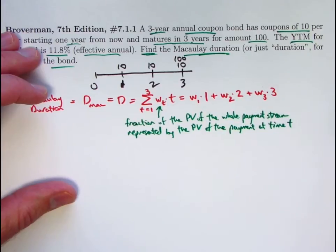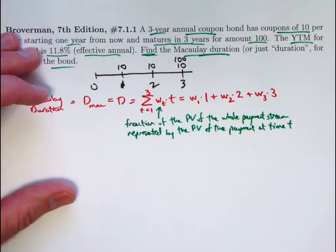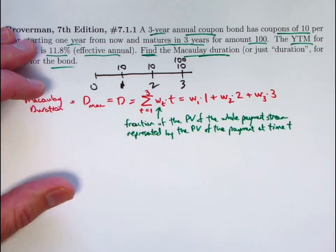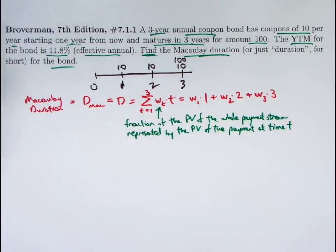However, being the furthest in the future, it does get discounted the most. And we're talking about the present values of these things. However, its size is so great compared to the other ones that it will be the dominant factor here. And we should expect a Macaulay duration a little less than three for the final answer. Also, since the Macaulay duration is a weighted average of times, you should emphasize the units would be in years in this case.